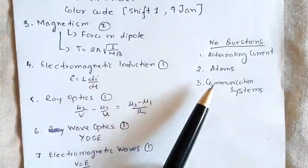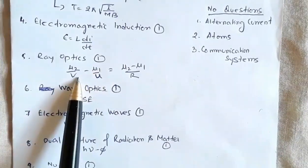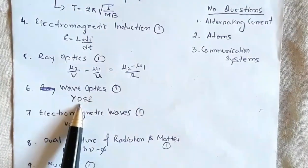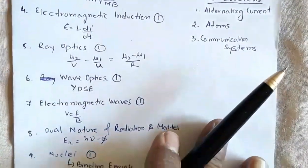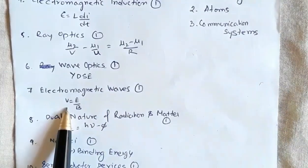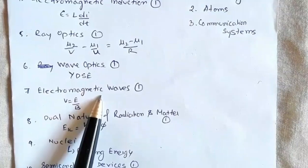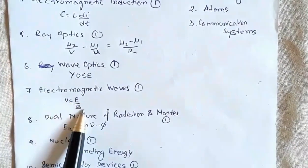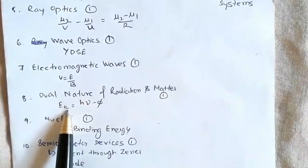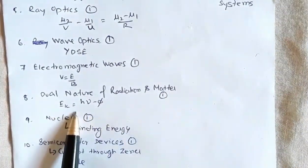From ray optics there was one question involving the lens formula. One question from wave optics from the topic Young's double slit experiment. One question from electromagnetic wave based on the relation v = E/B. One question was also asked on 9th January morning shift based on the same concept.